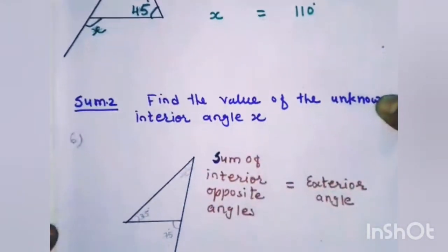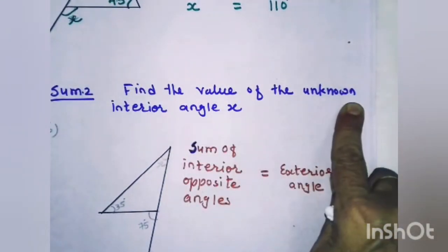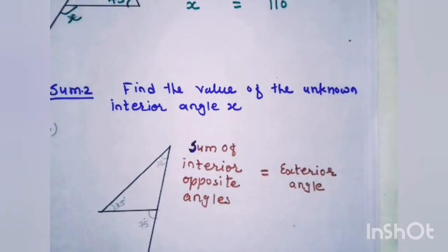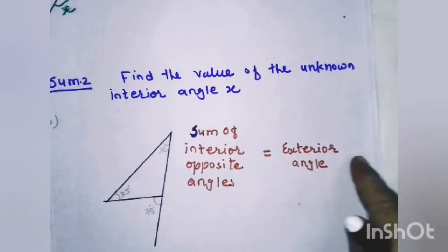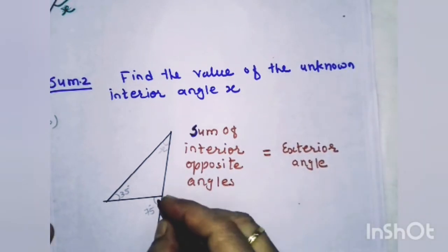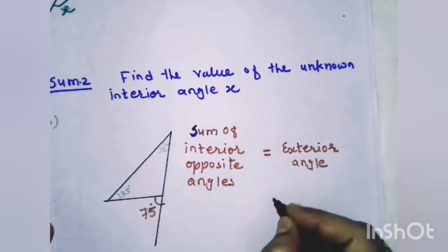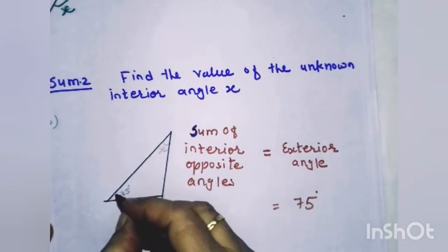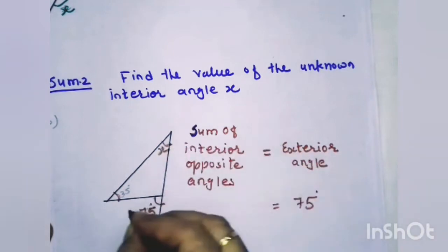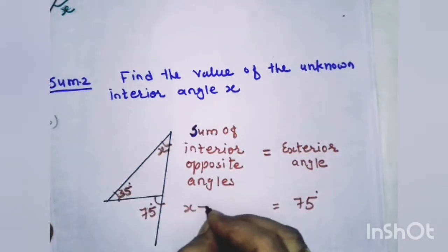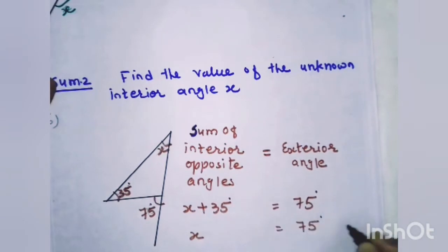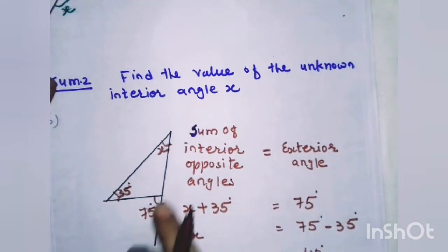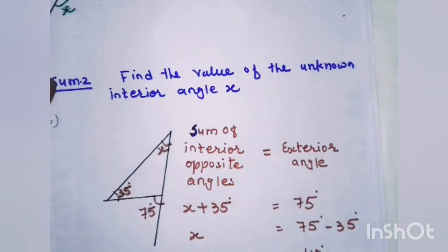The next sum is to find the value of the unknown interior angle x. The exterior angle given is 75 degrees, and the two opposite interior angles are x and 35 degrees. So x plus 35 degrees equals 75 degrees, therefore x equals 75 minus 35, which gives us x equals 40 degrees.